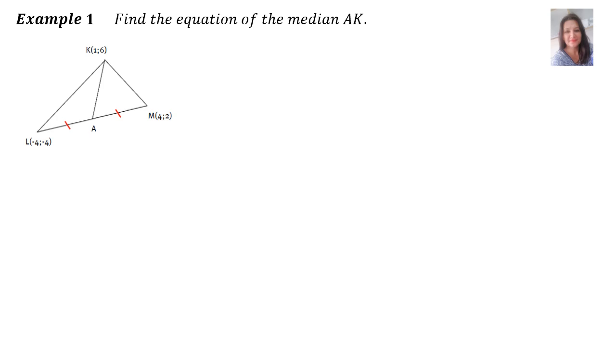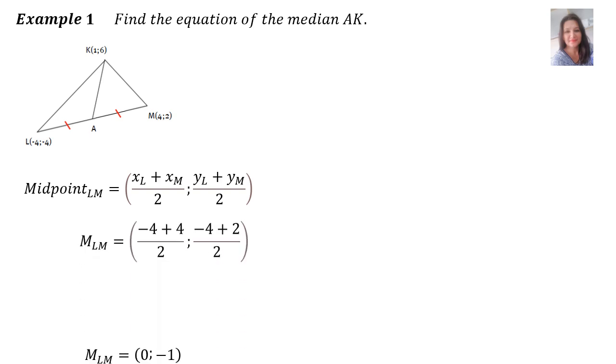Find the equation of the median AK. So first of all, we will find the midpoint of LM. We use the midpoint formula: x of L plus x of M over 2, and y of L plus y of M over 2. Then we substitute in the points and we find that the midpoint between L and M is 0 and minus 1.